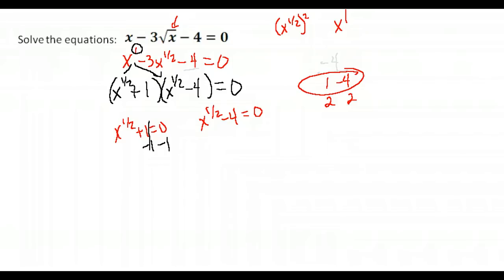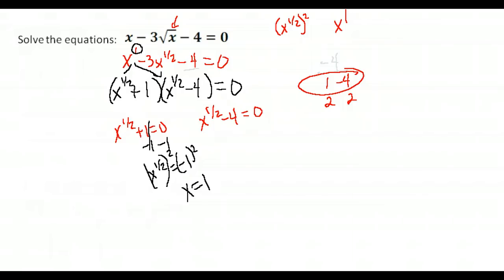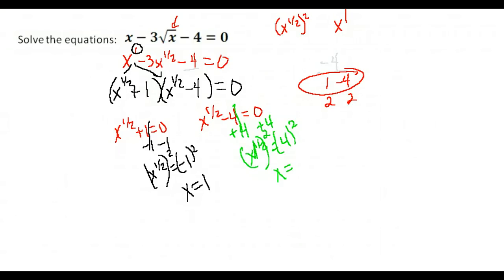Set each factor equal to zero and solve. Subtract 1 from both sides to get x to the one-half equals negative 1. To get rid of the one-half power, square both sides, giving x equals 1. For the other factor, add 4 to both sides to isolate x to the one-half. Square both sides to get rid of the one-half power, and x equals 16.